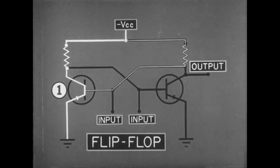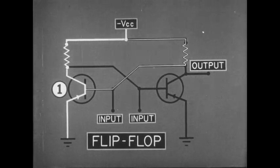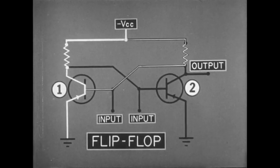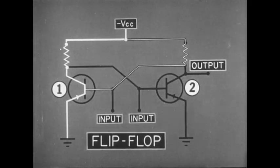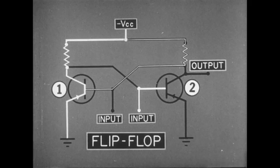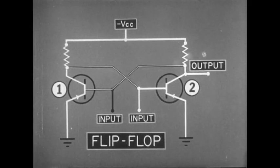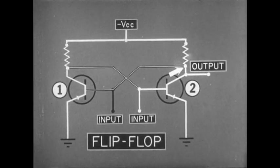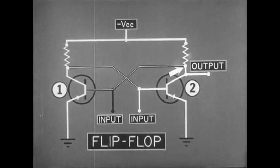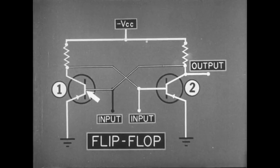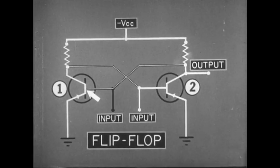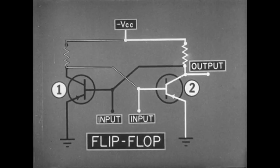Switch one will deliver an output indefinitely until a negative input is applied to switch two. As soon as transistor two's base becomes negative, it conducts. Current flows in its collector, which reduces the collector potential to zero. With zero volts applied to its base, transistor one no longer has forward emitter bias, so it stops conducting.